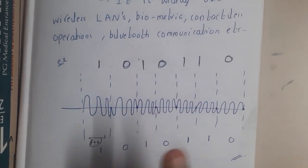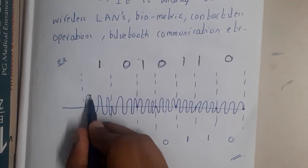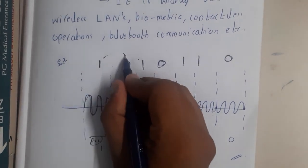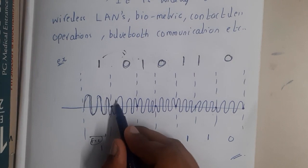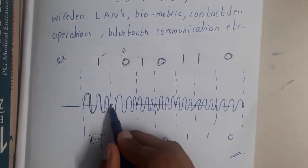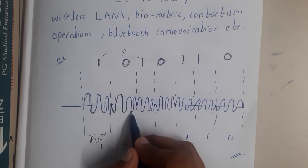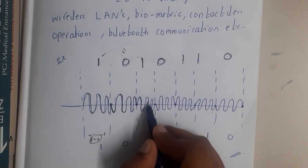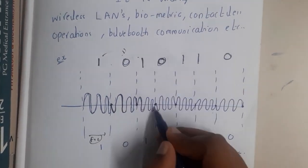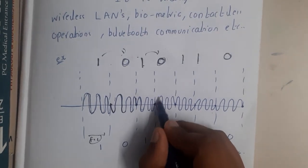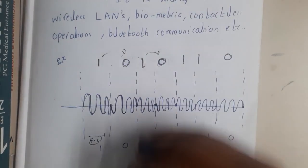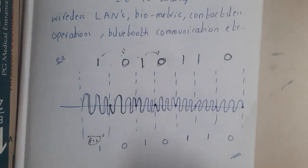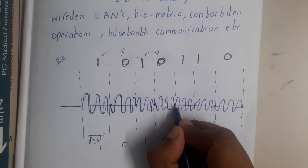Here it is a 1, so it goes in the normal way until here. Then there is a change — normally it should go up and come down, but since there's a change, it goes in the opposite direction: down and came up. Again there is a change, so instead of going down it goes up. Again zero — a change from one — so instead of going up, go down. This changing is nothing but the phase — you are reciprocating the phase, changing it by 180 degrees.